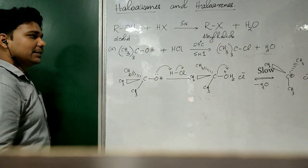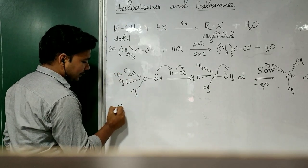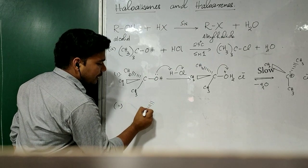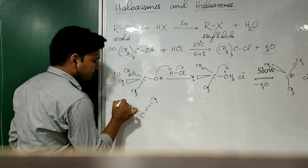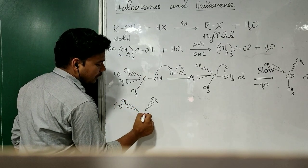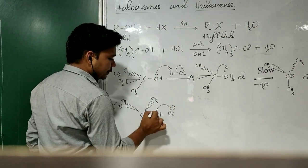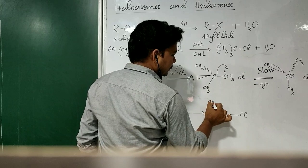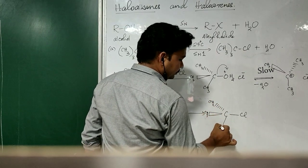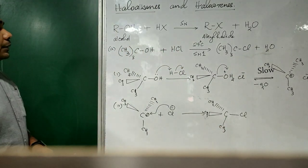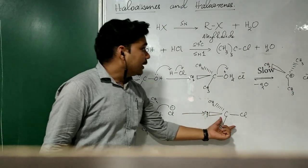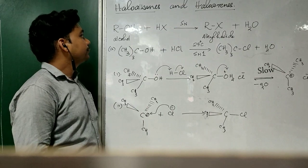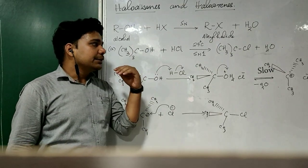So we get the carbocation intermediate and Cl minus, which acts as the nucleophile. In the second step, Cl minus attacks the carbocation, resulting in the formation of the final product, tertiary butyl chloride. Similarly, tertiary butyl bromide or tertiary butyl iodide can be prepared by using concentrated hydrobromic acid or concentrated hydroiodic acid.